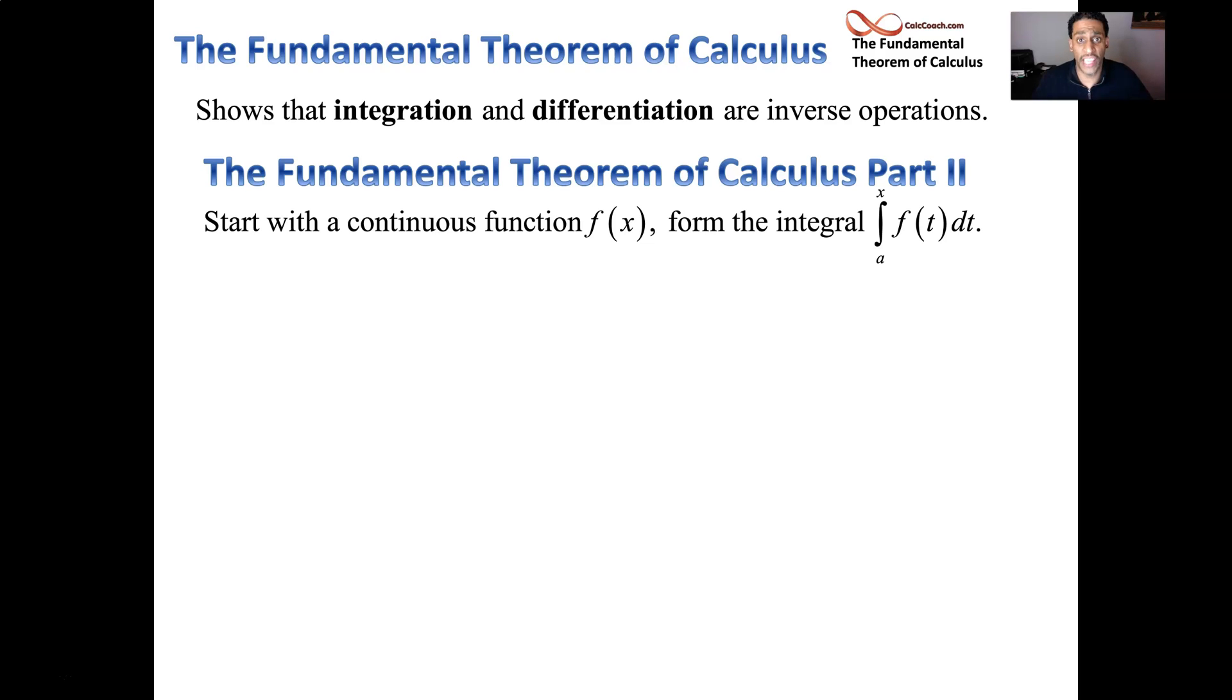You're going to start with the continuous function f of x, and you're going to form the integral of that function. It's going to be stated as the integral from a to x, and then we have a dummy variable in there, f of t dt. And so you can get back to the original function by following up that integration operation with the differentiation operation.